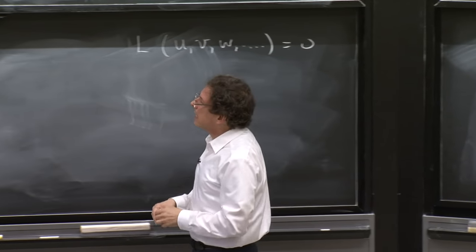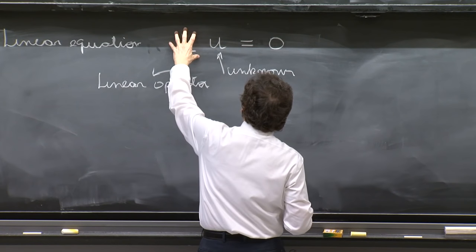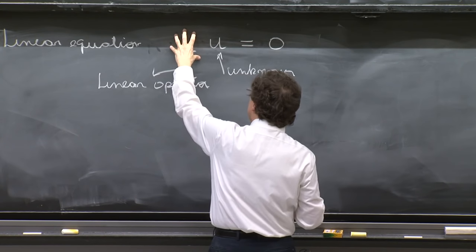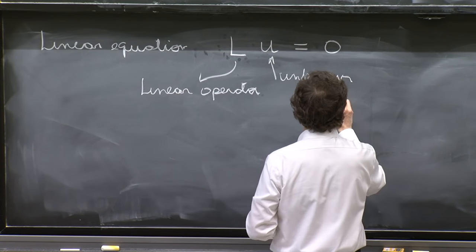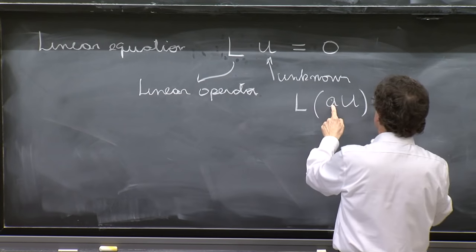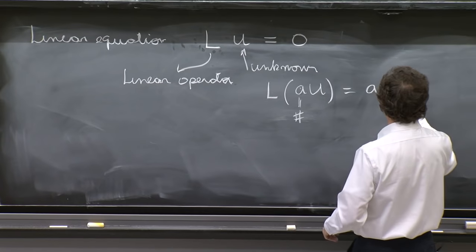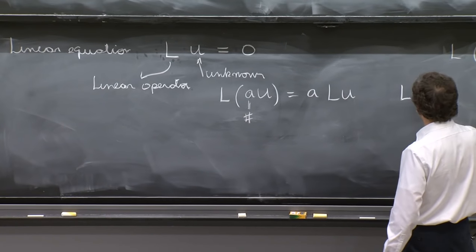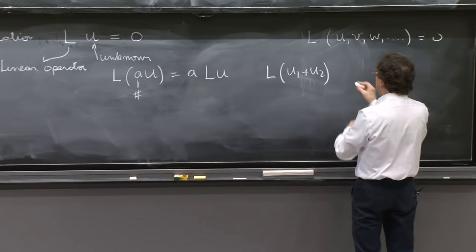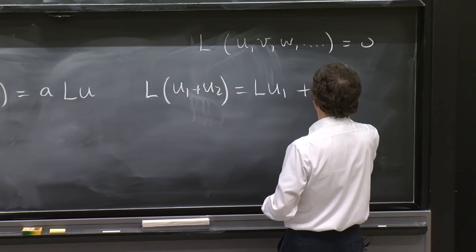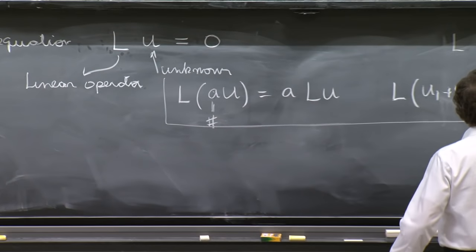So what is a linear equation? This equation is something in which the unknown can be anything, but L must have important properties. Being a linear operator means that L on a times u, where a is a number, should be equal to a Lu. And L on u1 plus u2 is equal to Lu1 plus Lu2. This is what we mean by the operator being linear.